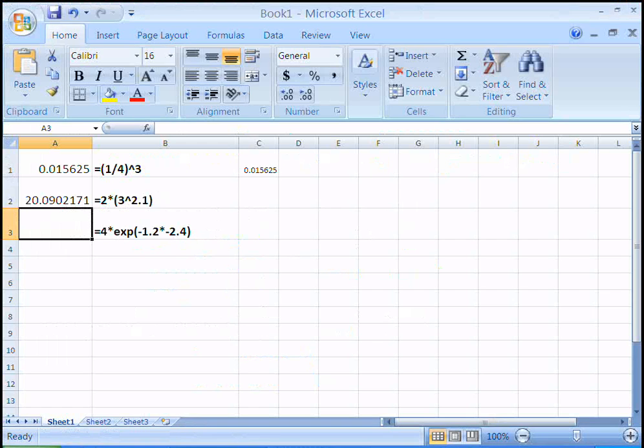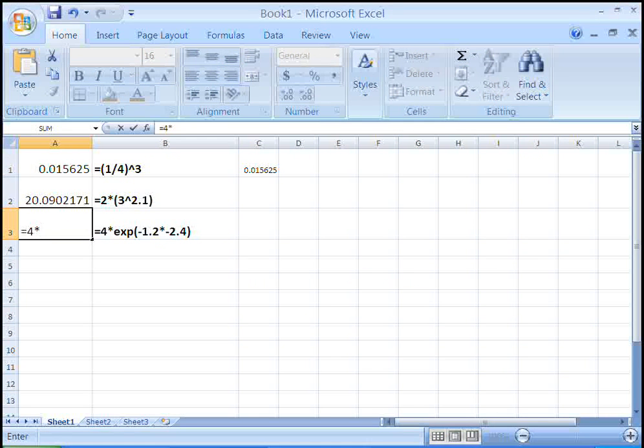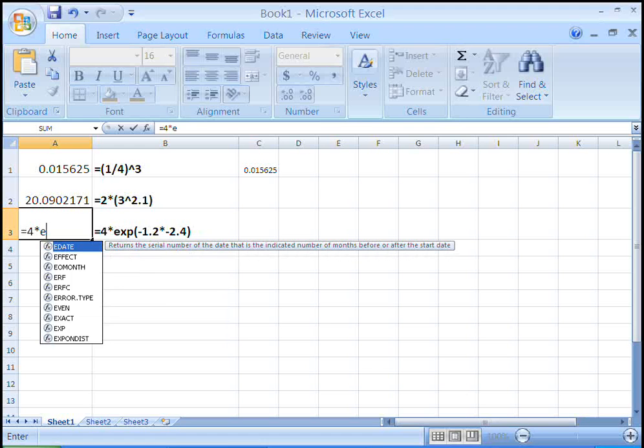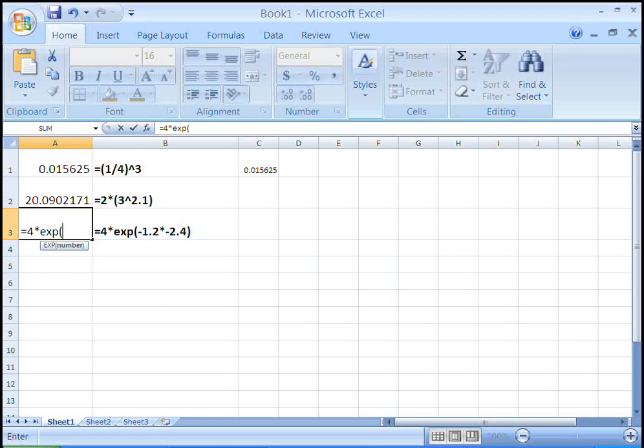Here, I'm going to type in equals 4 times. In Excel, the built-in function for exponential is exp, and then you do open parentheses. exp open parentheses says take e to whatever I type in the parentheses.